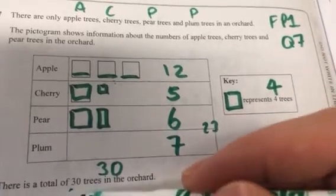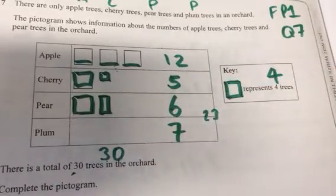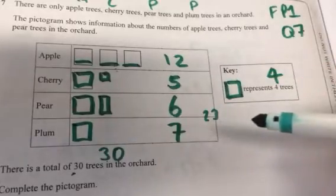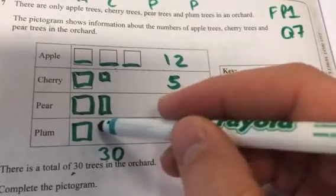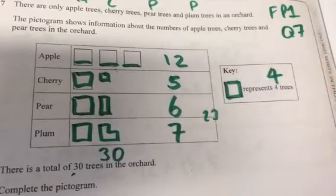And to answer the question correctly, it said complete the pictogram. So how do we show 7 using that key? We do a full square with a third. With a third? So that represents 4. So we need something that represents 3. So 3 quarters of that.